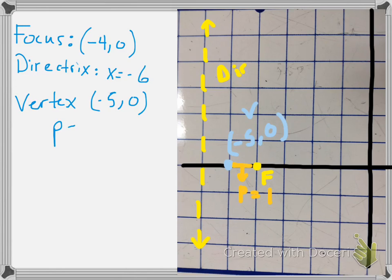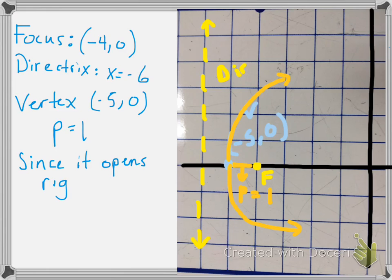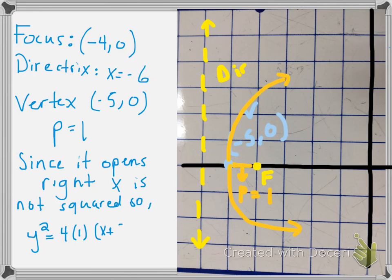Last, find p — the distance from the vertex to the focus or directrix. From the vertex to the focus, we've gone one unit, so p equals 1. Since the focus is inside the parabola, we know this opens to the right, meaning x is not squared. Therefore, we can write the equation as y squared equals 4 times 1 times the quantity x plus 5. And that is our equation. Please use this to finish your review.